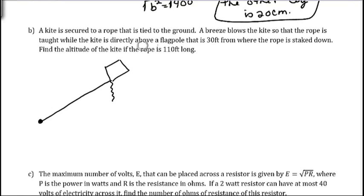And this kite is directly above a flag pole. So, there's a flag pole right here. That's 30 feet from where the rope is staked down. So, this distance from where the rope is staked down to the bottom of the flag pole is 30 feet. And we want to find the altitude of the kite if the rope is 110 feet long. So, the length of this rope is 110 feet. And we need to calculate this distance.